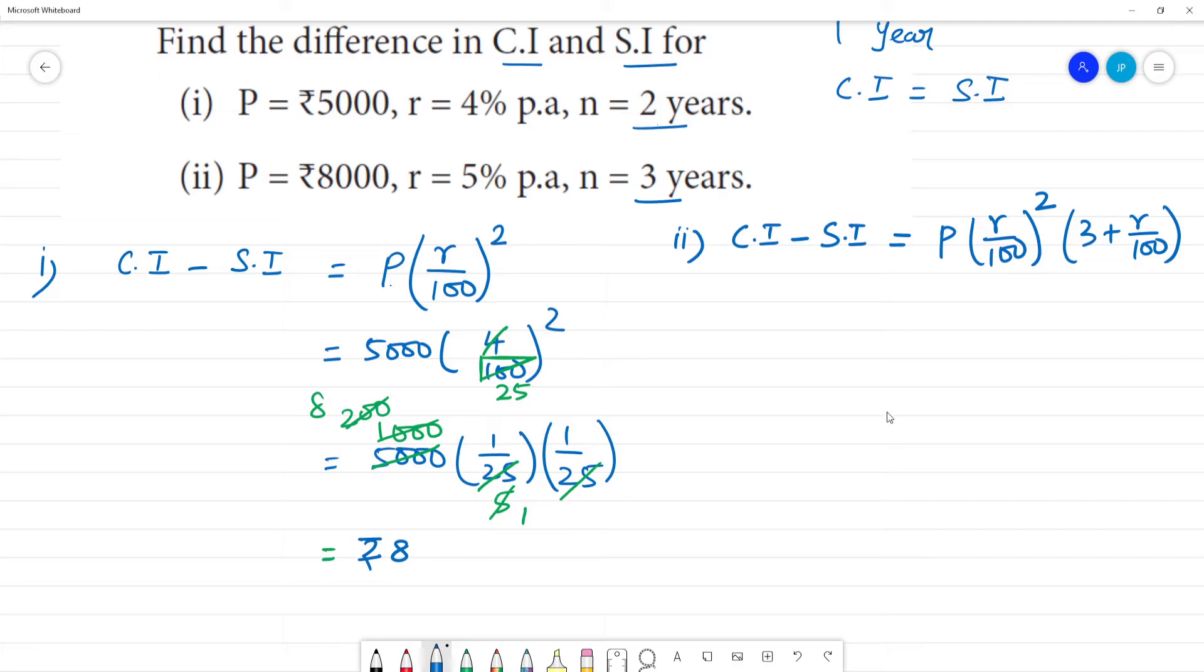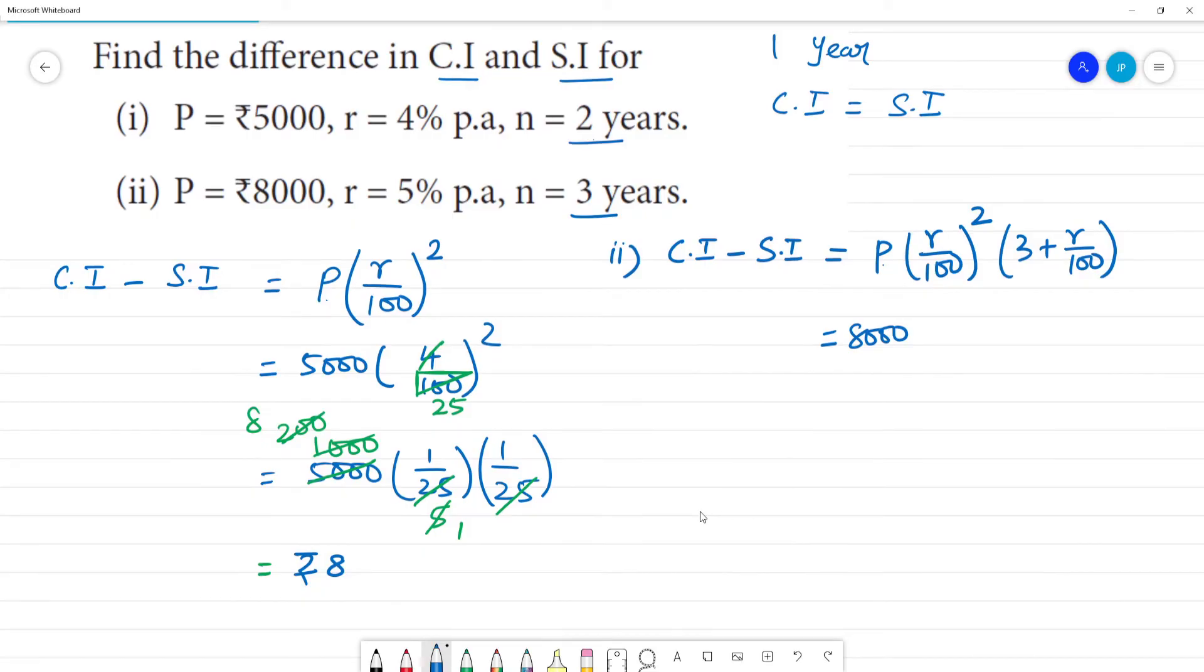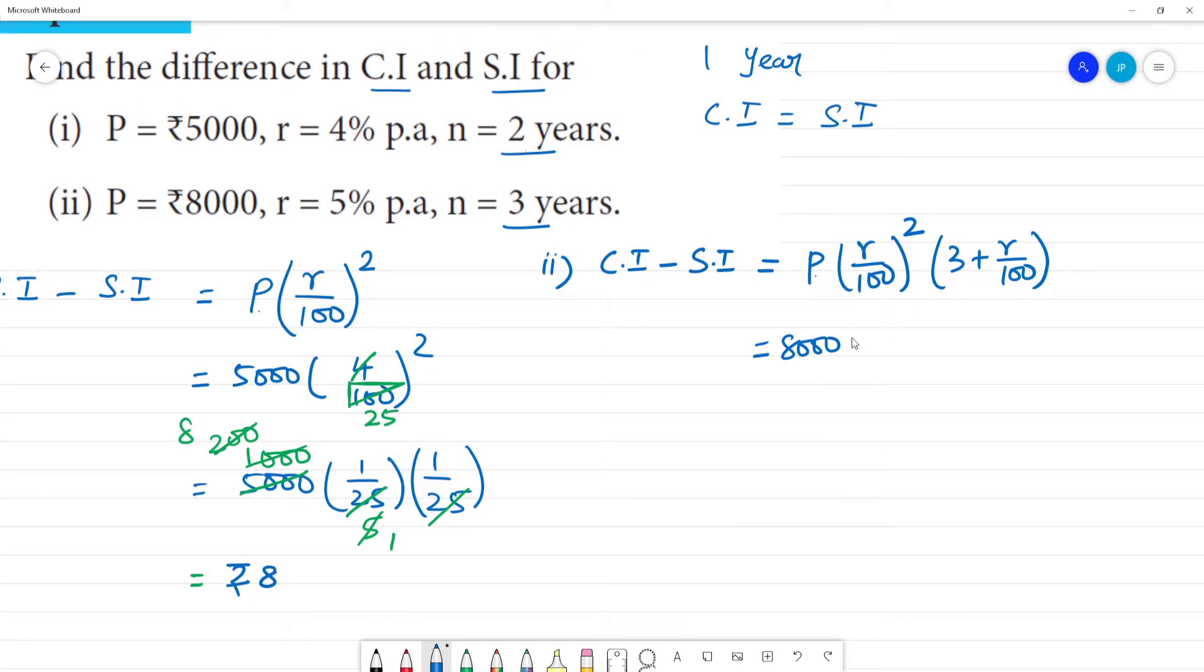3 plus r by 100. This is equal to P, 8,000. Right, 8,000. R is 5, 5 by 100 the whole square, 3 plus r 5 by 100.